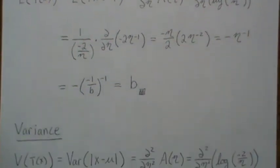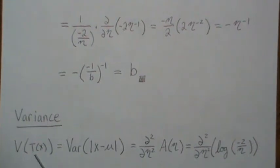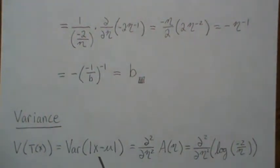To find the variance of our sufficient statistic, the variance of the absolute value of x minus mu is the second derivative of our log partition,